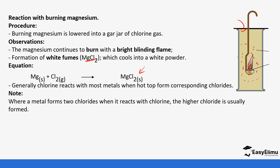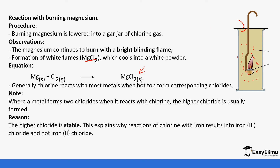In cases where two chlorides can be formed — for example, iron can form iron(II) chloride and iron(III) chloride — the one with the highest oxidation state is the one that is formed. So iron(III) chloride is formed rather than iron(II) chloride, because the higher chloride is more stable. This is why when chlorine reacts with iron it forms iron(III) chloride.